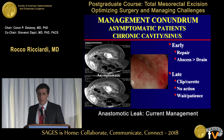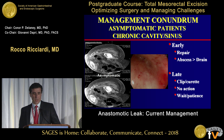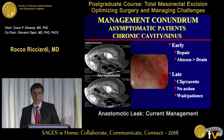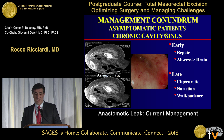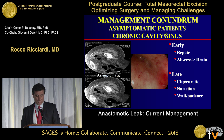The management conundrum really comes with asymptomatic patients who have chronic cavities or a sinus. The imaging shows a leak outside the anastomosis that, as you scroll through, communicates with the anastomosis — a chronic cavity in an asymptomatic patient. My practice: if this is early after surgery, I try to repair it; if there's an abscess, I drain it. If it is later on, I will clip or curette the area depending on appearance, or take no action and wait if it is much later — which involves a fair number of patients.